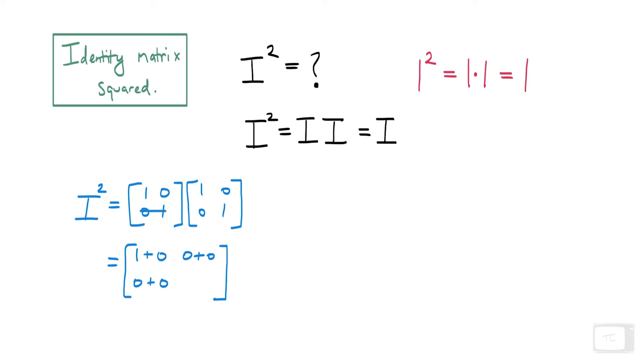Okay, lastly, across this row, down this column. 0 times 0 is 0, 1 times 1 is 1. Okay, that 1 saved us.